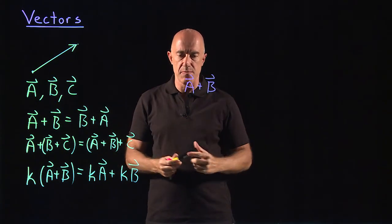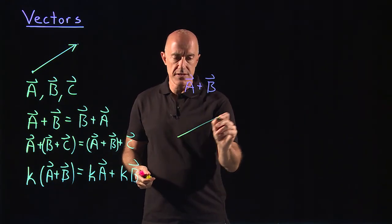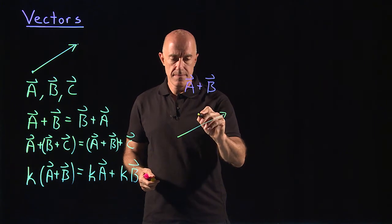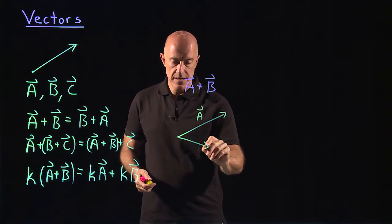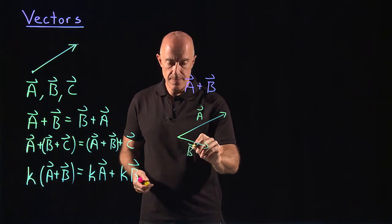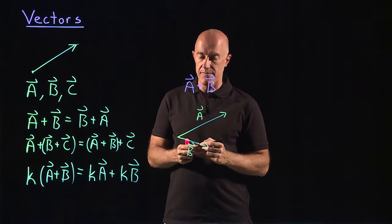I will draw them in the plane of the light board. So let's say this is a and this one is b. I put them so that their tails are touching.